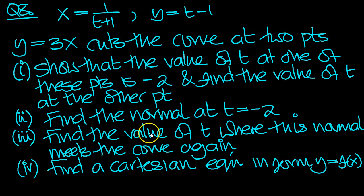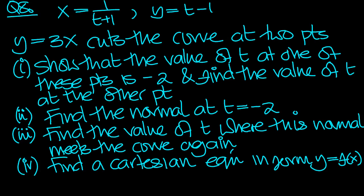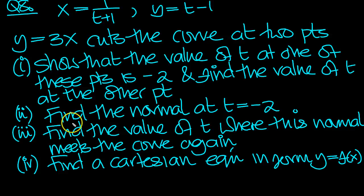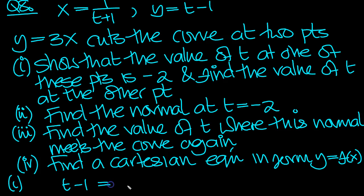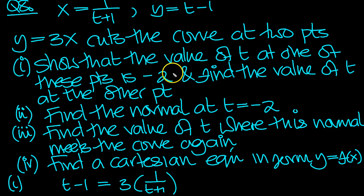So here's the question in summary. This line cuts the curve at two points. Show that the value of t at one of these points is minus 2, and find the other value. For this line to intersect, we'll have y, which is t minus 1, equal to 3x, which is 1 over t plus 1. We can solve for t and get two values.